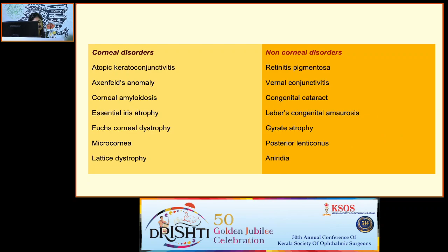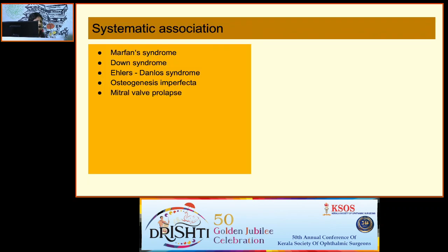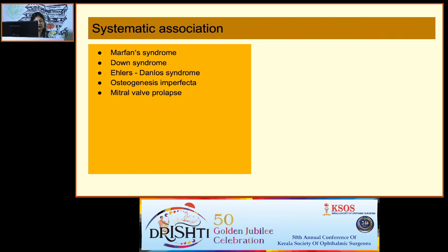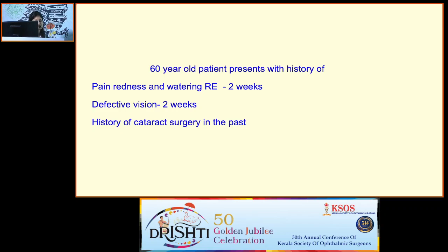You may also get systemic associations with keratoconus — be prepared to identify systemic signs of associated syndromes. Next case: a 60-year-old patient with pain, redness, watering, defective vision, and history of cataract surgery in the past.